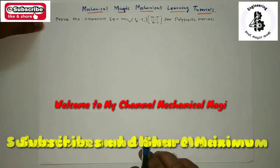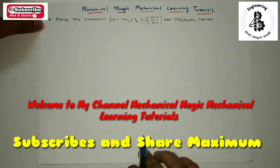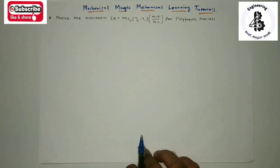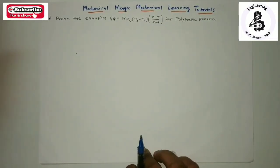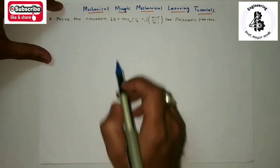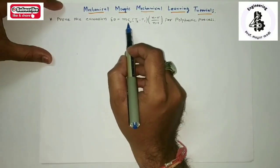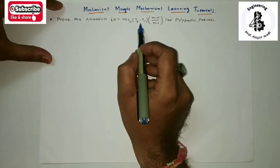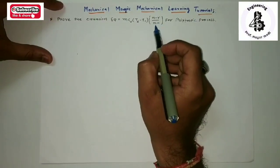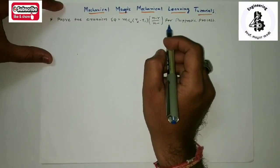Welcome to my YouTube channel Mechanical Magic, mechanical learning tutorials. In this video there are some equations that will be covered. Del Q equals mCv into (n minus gamma) upon (n minus 1) for a polytropic process.